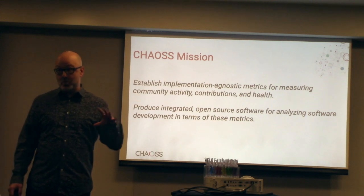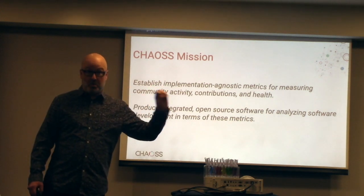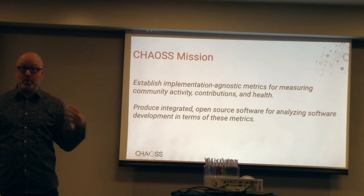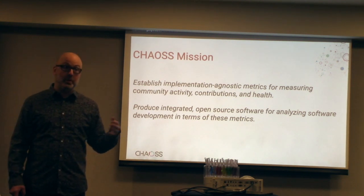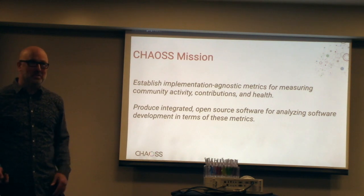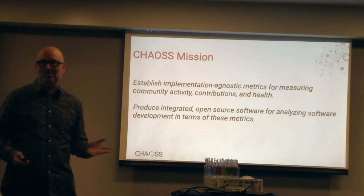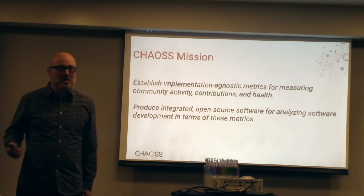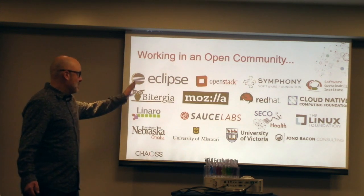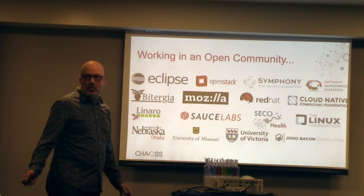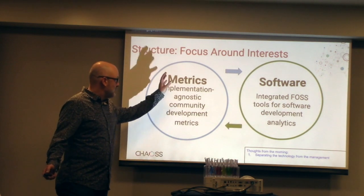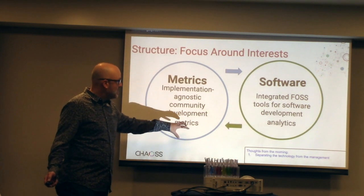We also produce integrated open source software for analyzing development of these metrics. GrimoireLab is the main commercial, robust, supported software, and Augur is a package that we use to prototype a lot of the metrics. We can move faster because we don't really have customers, so if we break things — we try not to.